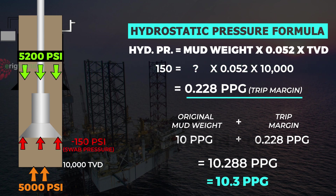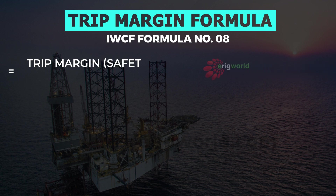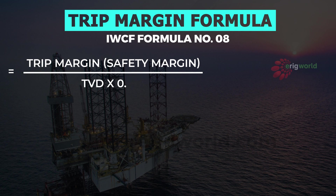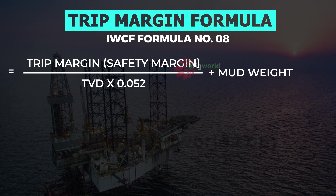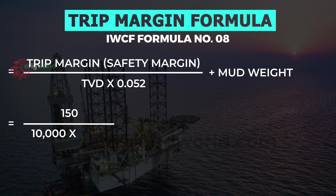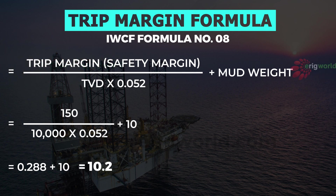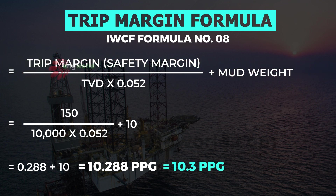This is how you calculate trip margin. Using the IWCF formula: trip margin (also called safety margin) equals the pressure value divided by TVD times the constant, plus the original mud weight. Applying this to the previous question: 150 psi divided by 10,000 feet times the constant, plus 10 ppg original mud density, gives 0.288 plus 10 = 10.288 ppg, rounded up to 10.3 ppg. This is the answer after including the trip margin of 150 psi.